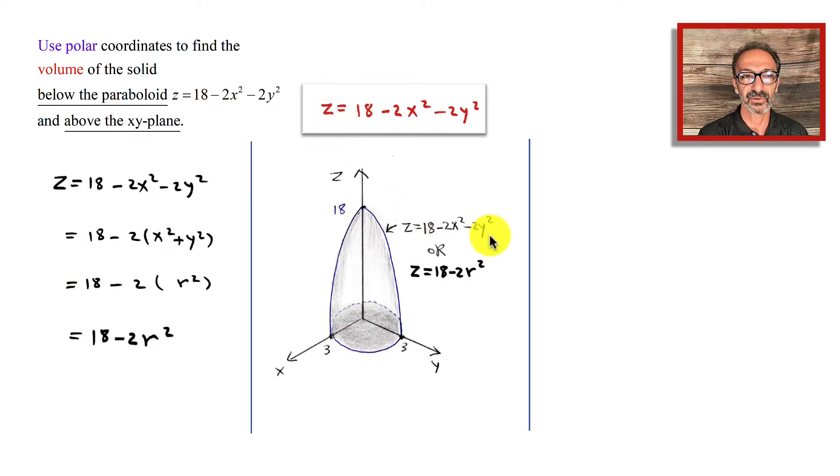Written differently, it's 18 minus 2r squared. To find the region down below, the projection, we're going to have to force z to be 0. So 0 equals 18 minus 2x squared minus 2y squared. We can take the minus terms to the other side. That's going to be 2x squared plus 2y squared equals 18. Divide by 2 every single term on the left and right side to reduce and simplify. I have x squared plus y squared equals 9.